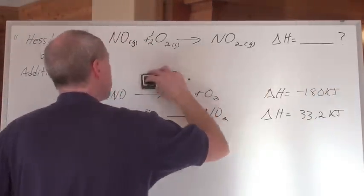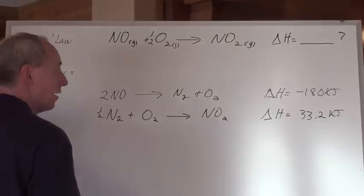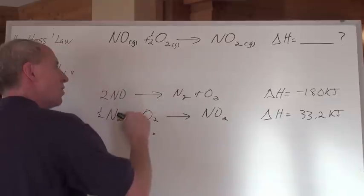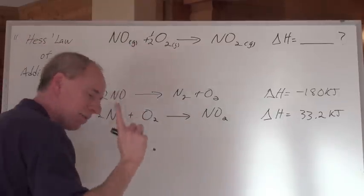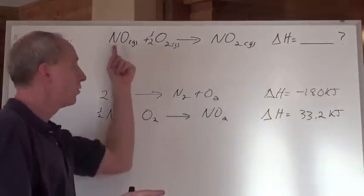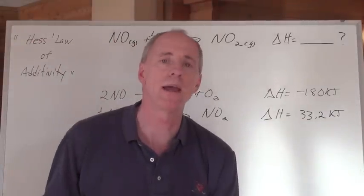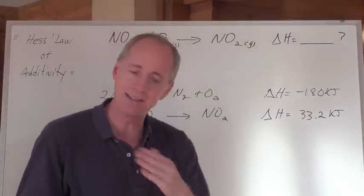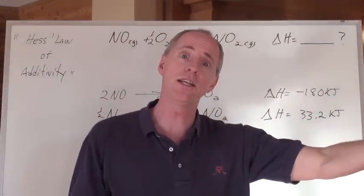So here's the thing. These two equations, hopefully, will add together to make this. But here's the thing. I've got the NO's on the proper side, but not in the proper amount. Because I only want one of those, but I've got two here. So what do I do? I take everything in that equation, including the heat term, and divide by two.